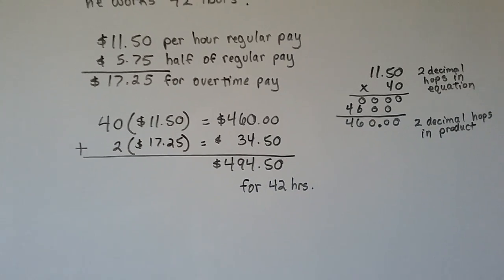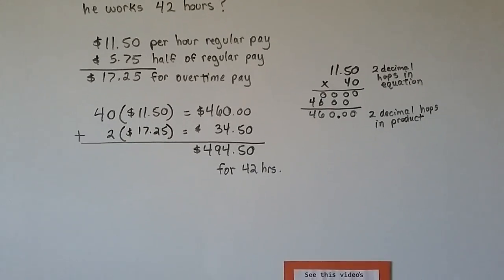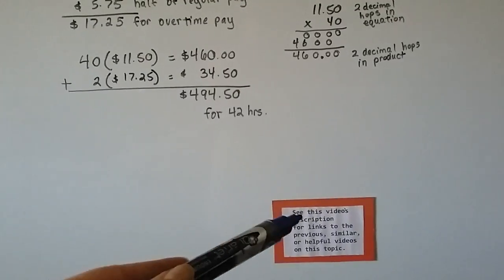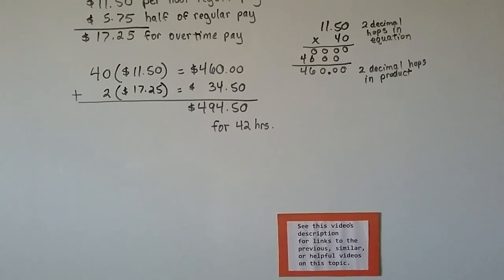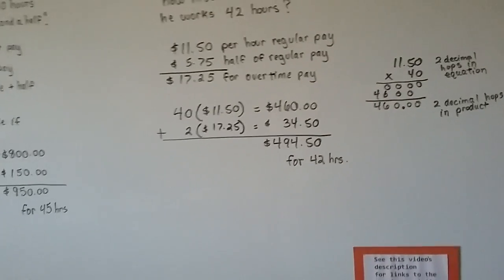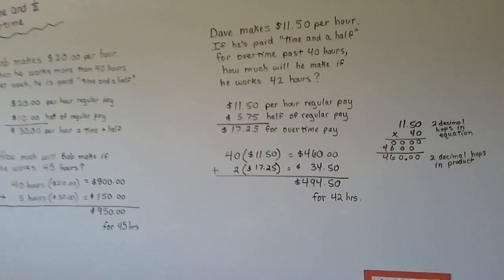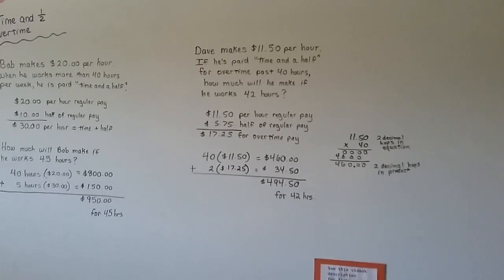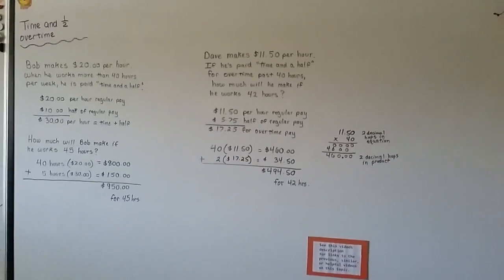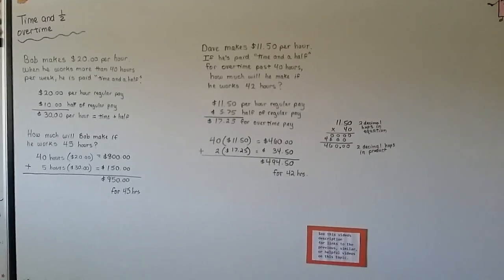See? That wasn't that bad, was it? Now if you want to know more about multiplying decimals or problems like this, check the description because there'll be links to help you. So that's how you figure time and a half overtime. I hope this was helpful and I'll see you next video. Bye!